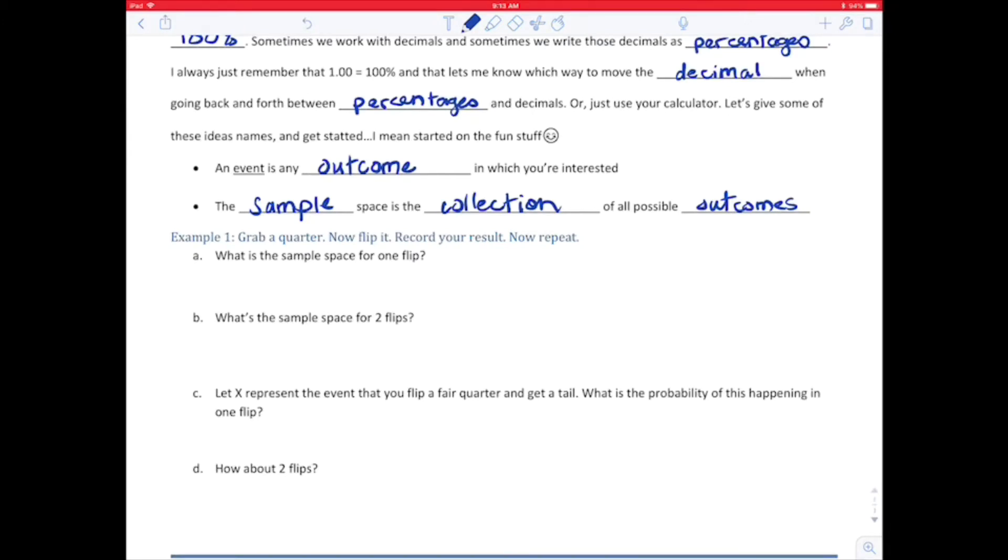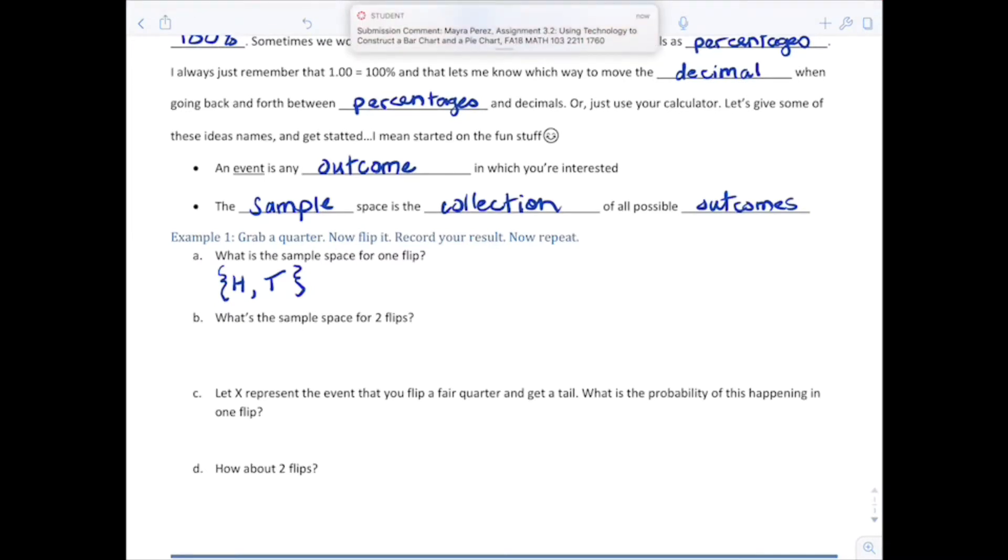Okay, grab a quarter. You got it? Now flip it. Record your result. Now repeat. What was the sample space for one flip? Well, we could get a head, or we could get a tail, right? Put it in set notation and you've got your space. What about two flips? What could happen?